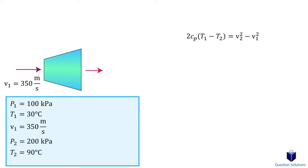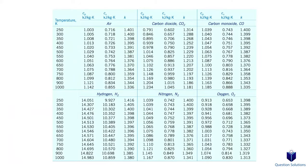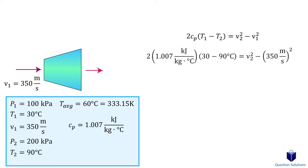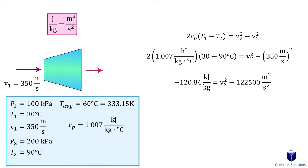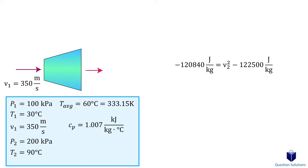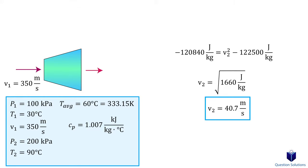We use a table with the average temperature: (30 + 90) / 2 = 60°C, or 333 K. At 333 K, the specific heat value falls between 1.005 and 1.008, so we extrapolate and use 1.007 kJ/(kg·K). Plugging in all values, the left side is in kilojoules per kilogram, so we multiply by 1000 to convert to joules per kilogram. Taking the square root gives us an exit velocity of 40.7 meters per second. Note that J/kg equals m²/s², so taking the square root yields m/s.